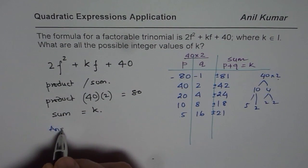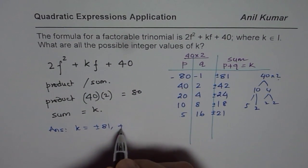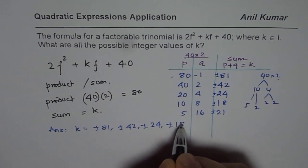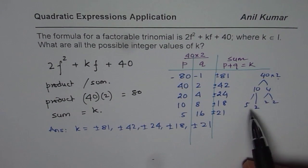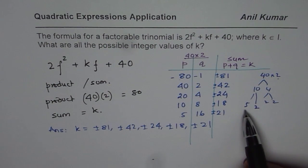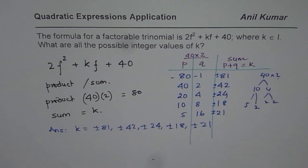So our answer is: k could be equal to ±81, ±42, ±24, ±18, ±21, and so on. Likewise we can complete our list, and this list is complete since we have taken care of all combinations of the given factors — 5 × 2 × 2 × 2 × 2 × 2. So that gives us the complete list of numbers. I hope that helps. Thank you and all the best.